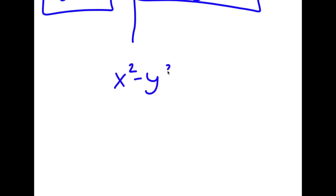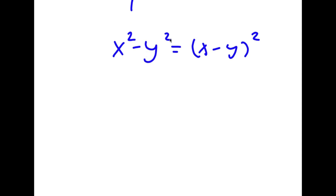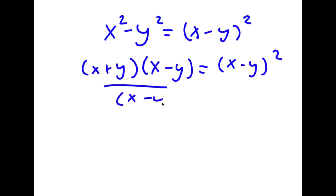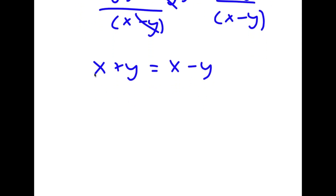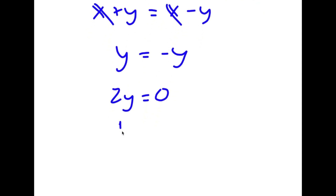Now I have another method of solving this. I have x squared minus y squared is equal to x minus y squared. I'm going to rewrite x squared minus y squared as x plus y times x minus y, and then divide both sides by x minus y. These cancel out, leaving x plus y is equal to x minus y. I can cancel the x terms, leaving y is equal to negative y, meaning 2y is equal to 0, and y is equal to 0.